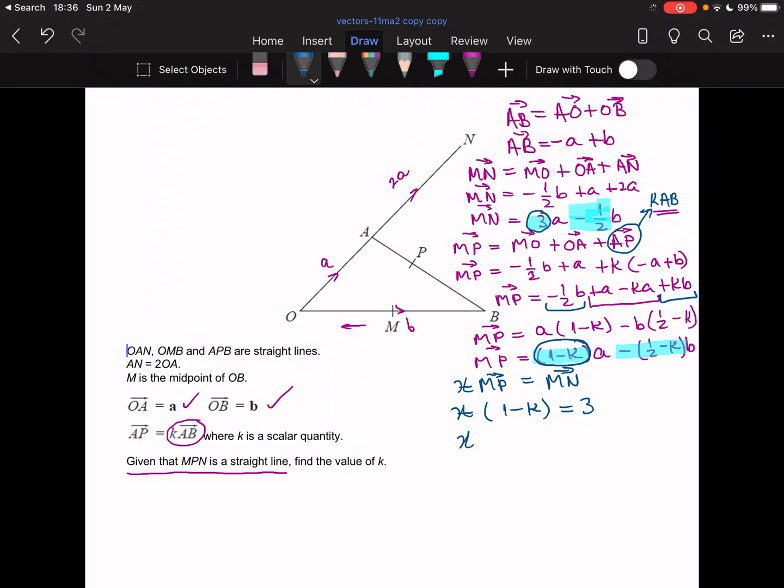And then I'm going to do the same. So I'm going to take my x and multiply that by the number in front of the b for MP. So that's going to be, I can't forget my minus there, half minus k. And I know that if I do that multiplication, I'm going to get minus half, which is here.